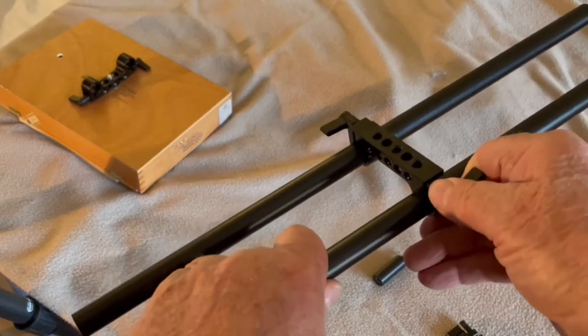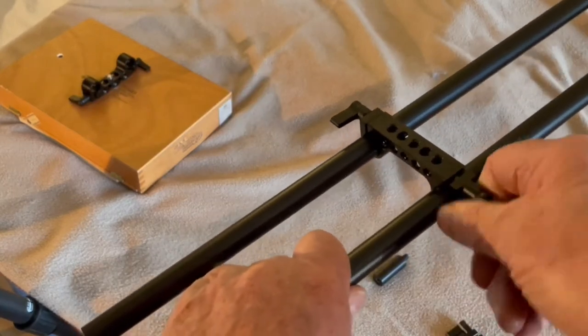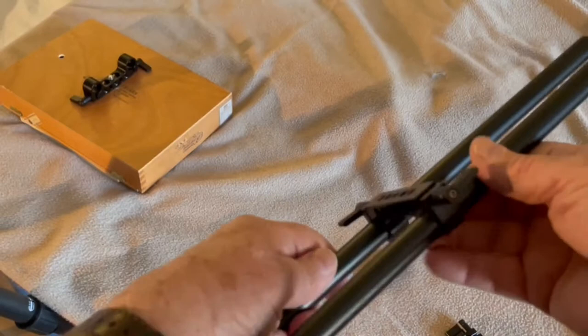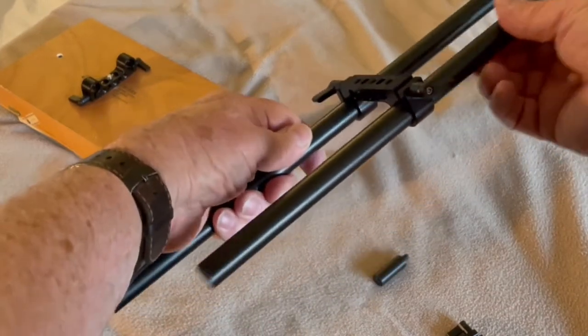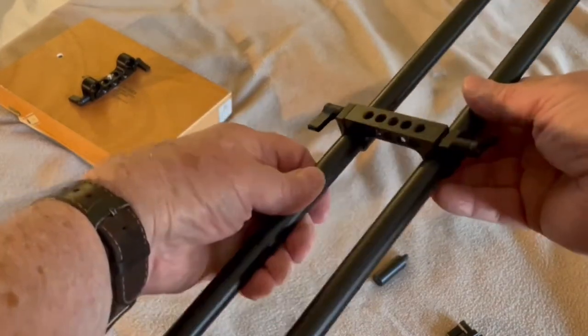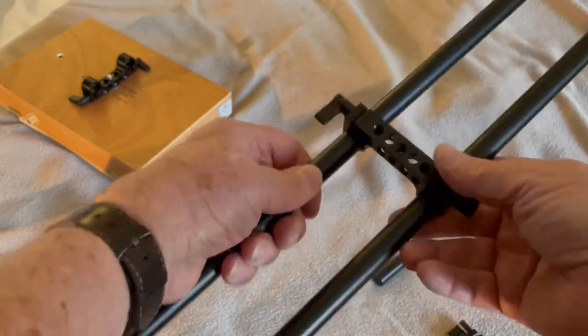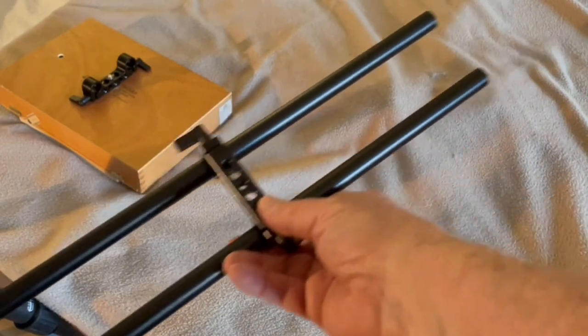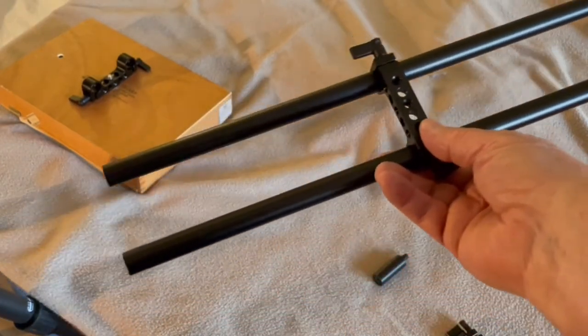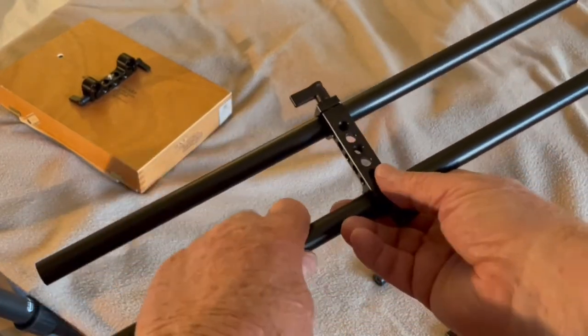If I loosen this clamp, this rod is now loose. I put it back and tighten it down. We have the side-by-side sketch easel clamp.